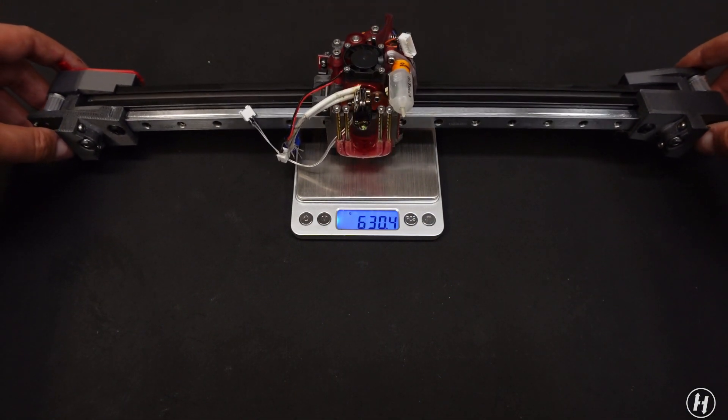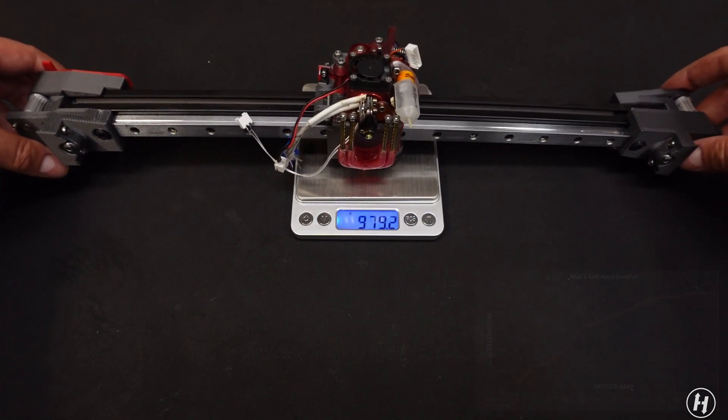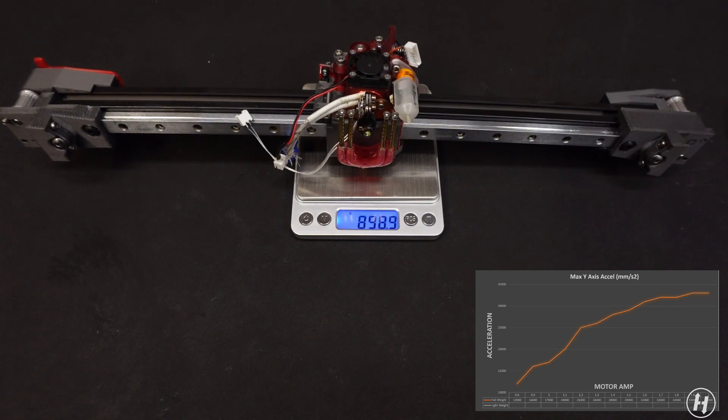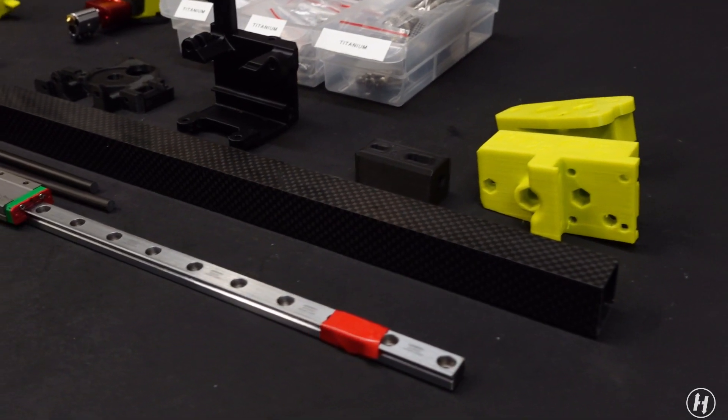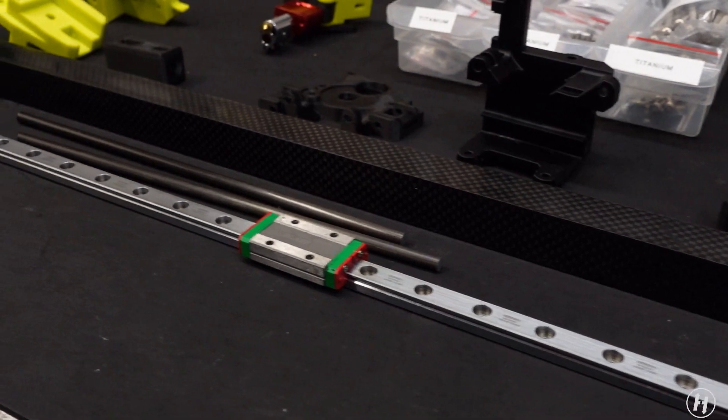The current X-axis assembly weighs just under 900 grams. I suspect that making it lighter will increase the max acceleration we can get for each amp value. Let's get to work.